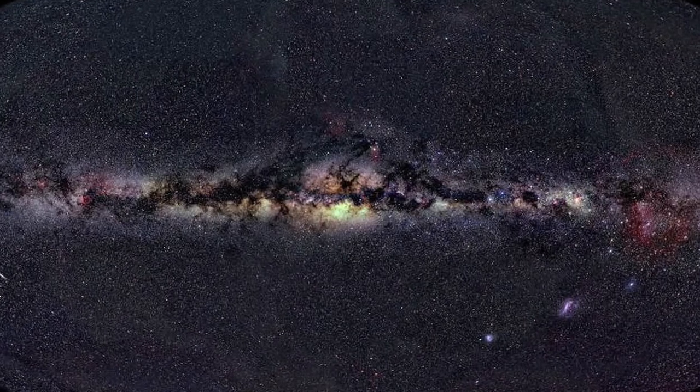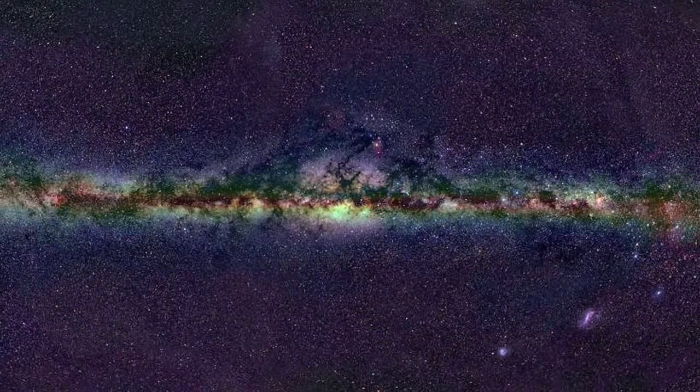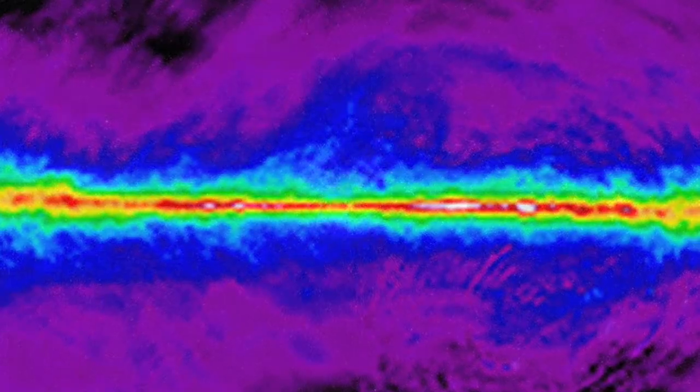Hydrogen atoms in interstellar space emit radio waves and so in this image the brightest areas show where most of the hydrogen is. In this case it is in the plane of the Milky Way.